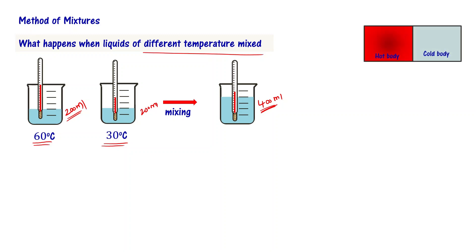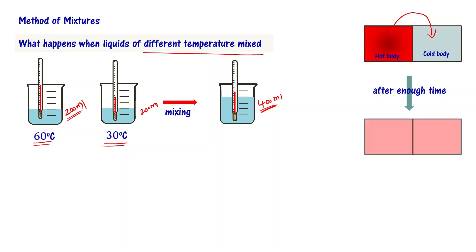To answer this question, let us recall this concept. I have a hot body and I have a cold body. When they are in thermal contact, heat transfers from the hot body to the cold body until they attain the same temperature. After enough time, if you leave these two bodies in thermal contact, they will have the same temperature. Hot body loses some heat and cold body gains the same amount of heat. The final temperature TF is going to be greater than TC but smaller than TH. Please note this.